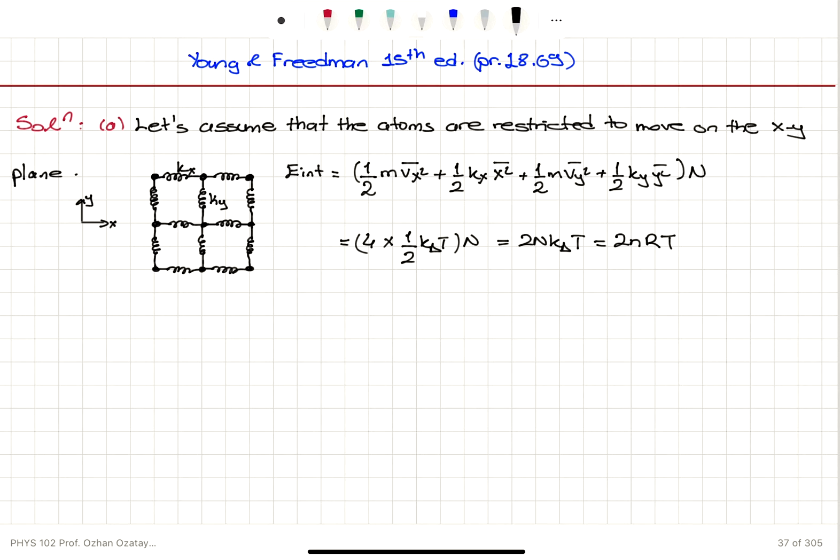If I want to calculate the molar heat capacity or molar specific heat, it is one over the number of moles, the partial derivative of internal energy with respect to temperature at constant number of moles. It's equal to 2R. That's the answer to part A of the problem.